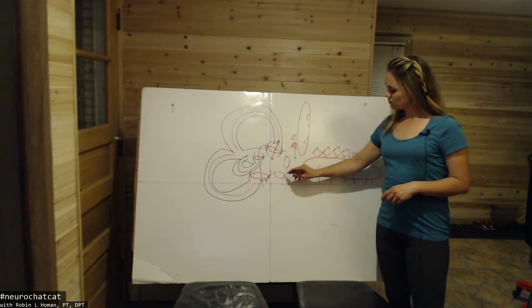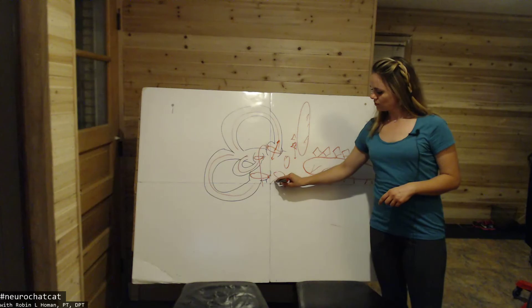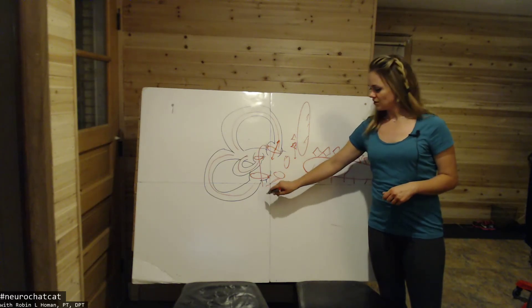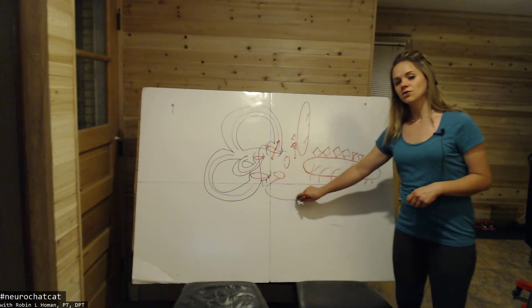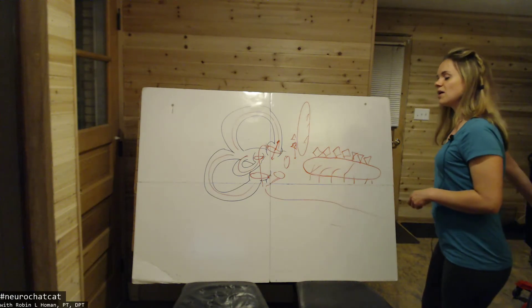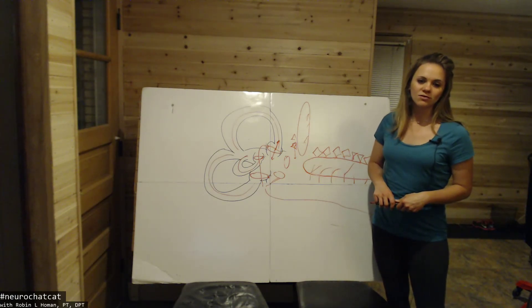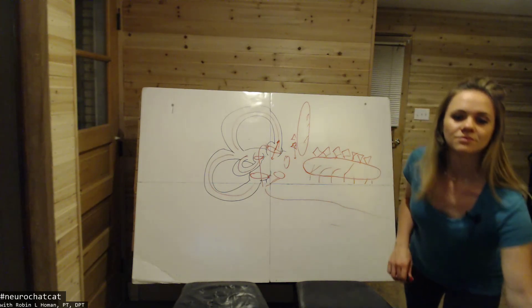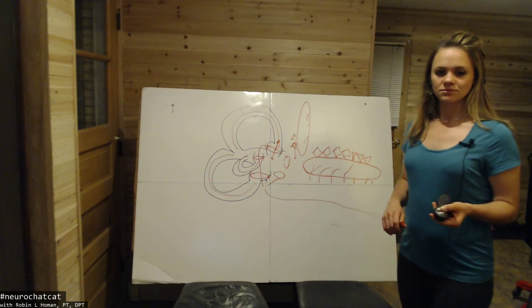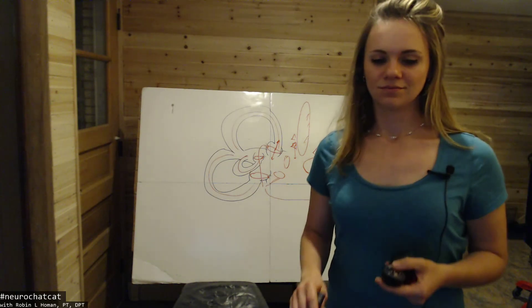And so all this also goes down into the eighth afferent cranial nerve to the pons and to create all kinds of fun responses in the brainstem level. There you go. There you go.